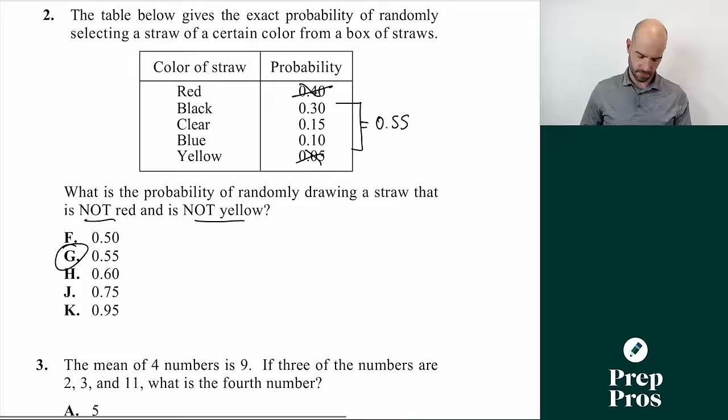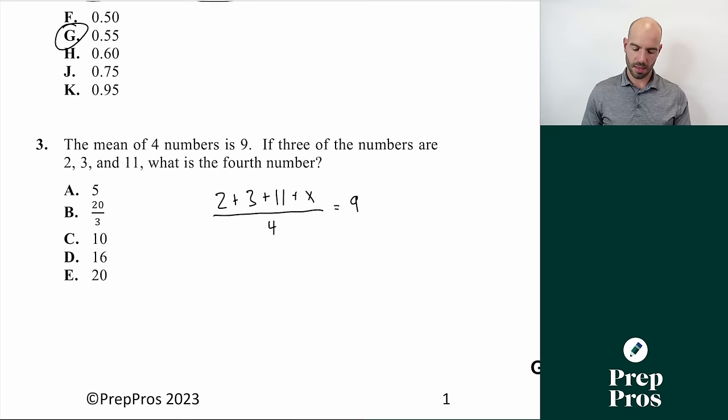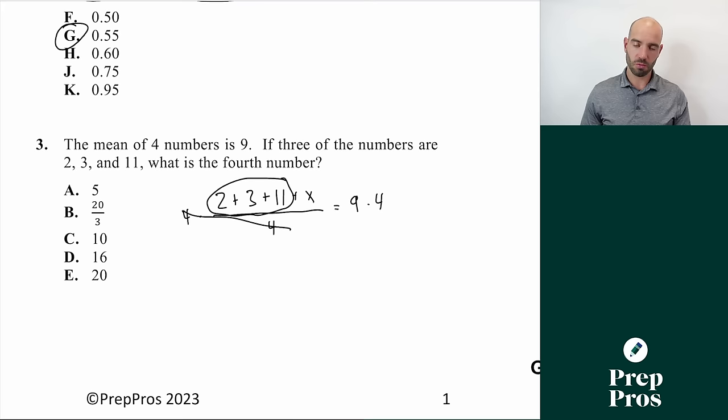Number three: the mean of four numbers is 9. If three of the numbers are 2, 3, and 11, what's the fourth? To find the average, we add all numbers including our unknown x, and divide by 4 to equal 9. Multiplying both sides by 4, we get 2 plus 3 plus 11 plus x equals 36. Since 16 plus x equals 36, we subtract 16 from both sides and get x equals 20. The answer is E.